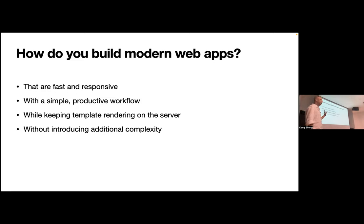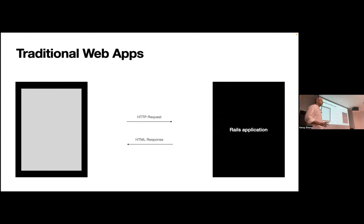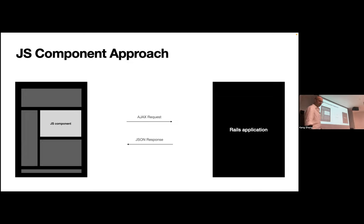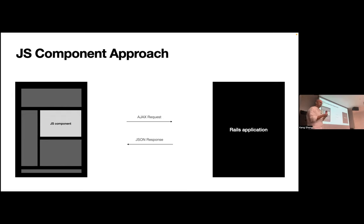How do traditional web apps work? In the simplest form there's an HTTP request handled by a web server and the Rails application, which renders a response and returns it in HTML format to the browser. With the JS component approach, if we want a particular element on the page to send that request as an AJAX request, it goes to the Rails application, which might return a JSON response, and the JavaScript on the client side does some processing to manipulate the DOM elements on the page.